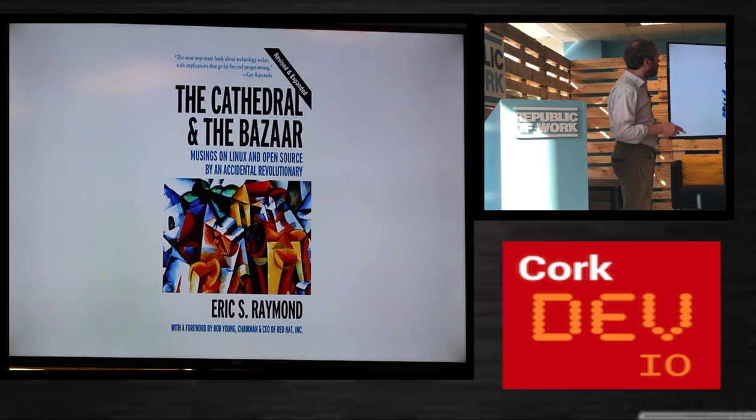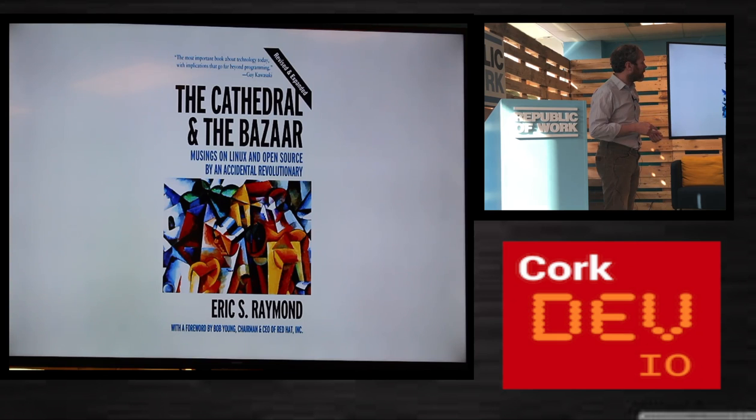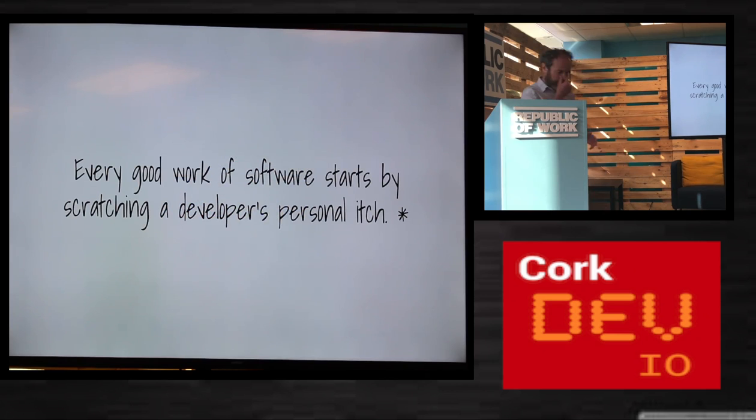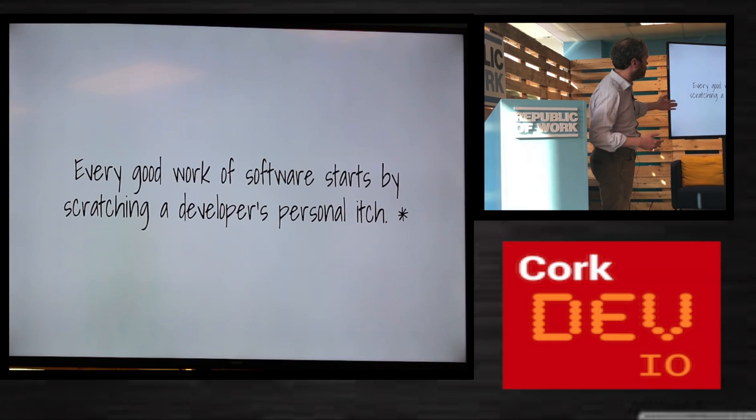Before I wrap up, I'll quickly go through this book. It's from 1999, on open source projects - 'The Cathedral and the Bazaar' - comparing open source projects versus large proprietary projects. There are 19 tips; I've picked out a few in particular. This one is very definitely true of GIMP: every good work of software starts by scratching a developer's personal itch. That is the history of GIMP, and I think it's the history of all the great methods we've got.